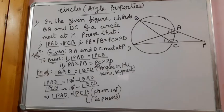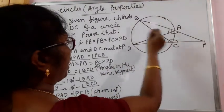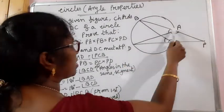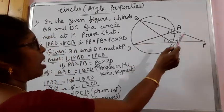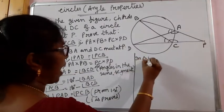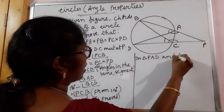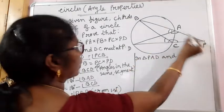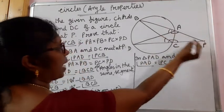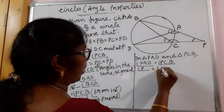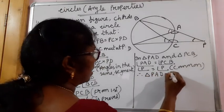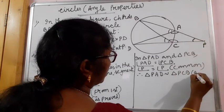Now let us work out for the second bit: PA into PB equal to PC into PD. We can see PA and PD are the sides of triangle PAD, and PC and PB are the sides of triangle PCB. So let us work to make these two triangles similar. In triangle PAD and triangle PCB, we just proved angle PAD is equal to angle PCB, and angle P is common to both triangles.